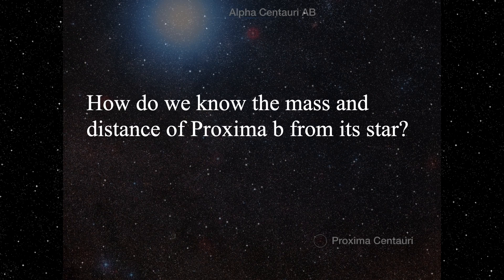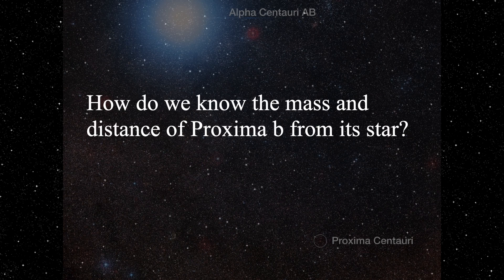How do we know the mass and distance of Proxima B from its star? Proxima B is the official name of the planet. Why B and not A, since it's the first planet discovered around that star? It's because the star itself has an implied A, so the second object in the system gets B — therefore it's called Proxima B. A little odd, but that's just the way it is.